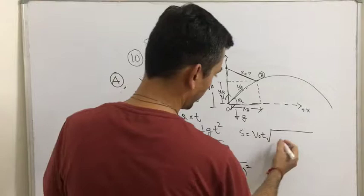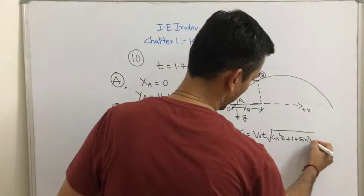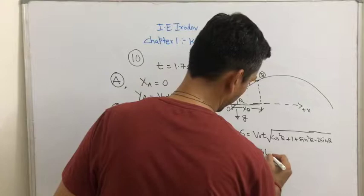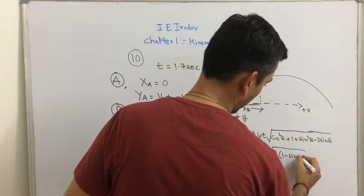And inside, I have cos square theta plus, let us open this, 1 plus sin square theta minus 2 sin theta. So if I solve this, I get V0 t under root 2, 1 minus sin theta.